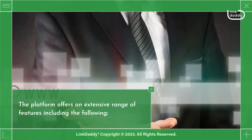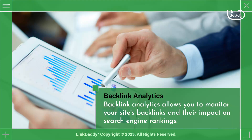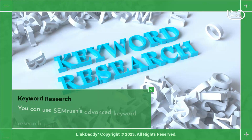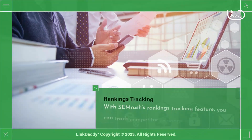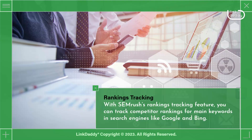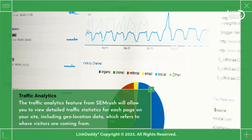The platform offers an extensive range of features including the following. Backlink Analytics allows you to monitor your site's backlinks and their impact on search engine rankings. Keyword Research: you can use SEMrush's advanced keyword research tool to discover new keywords with high commercial intent. Rankings Tracking: you can track competitor rankings for main keywords in search engines like Google and Bing. Traffic Analytics: the Traffic Analytics feature allows you to view detailed traffic statistics for each page on your site, including geolocation data, which refers to where visitors are coming from.